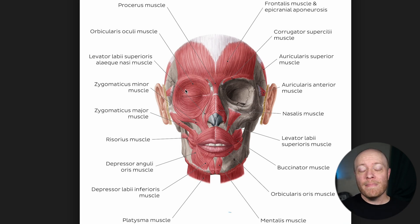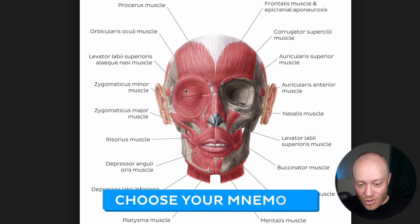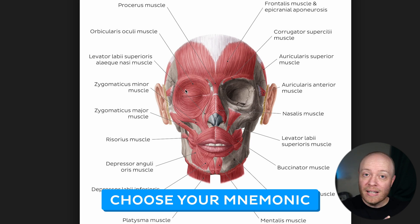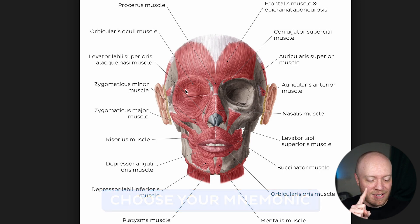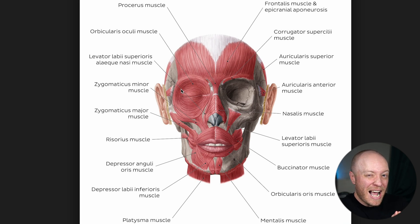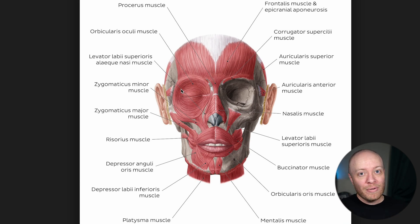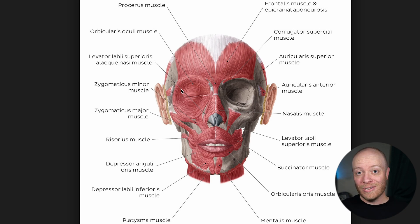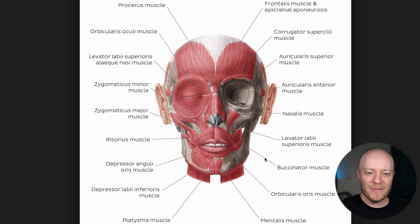The third step is you choose the type of mnemonic. Is it a pun? Is it a wordplay? Is it a memory palace? Today I've decided to choose an acrostic. An acrostic is like an acronym but much larger — an acronym creates a single word while an acrostic creates a really long phrase. And I feel like that makes sense given there are 18 muscles here.